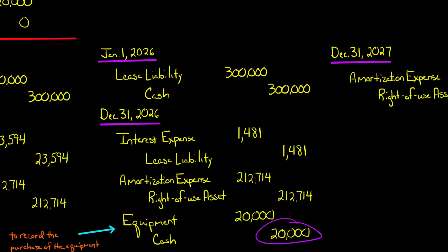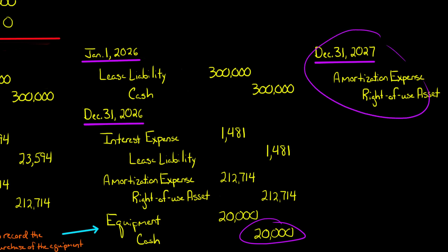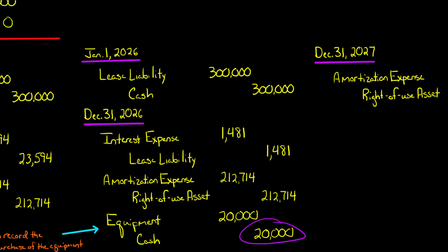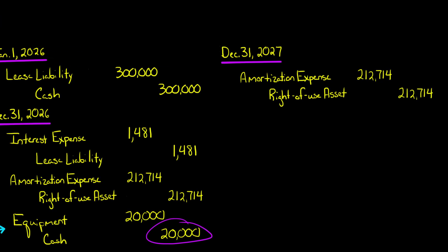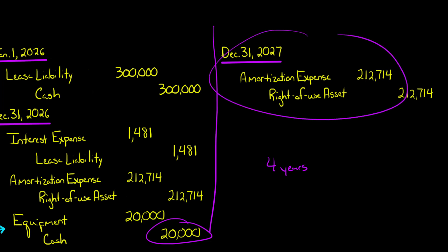In the fourth year, remember the lease is done — so on December 31st, 2027, there's no interest expense and no cash payments because the lease ended after three years. So why do we have a journal entry in year four? Because when the lease has a bargain purchase option, the lessee amortizes the right-of-use asset over the remaining economic life — which in this case is four years instead of the lease term of three years. So even though the lease is done, they still need to make that final journal entry to record the amortization expense.